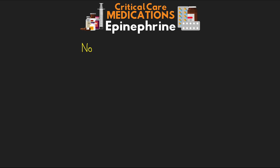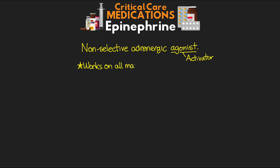Epi is a non-selective adrenergic agonist. An agonist is essentially a receptor activator, and epi works on all major adrenergic receptors. Think here: alpha-1, alpha-2, beta-1, beta-2, and beta-3 receptors, which are the major subtypes.